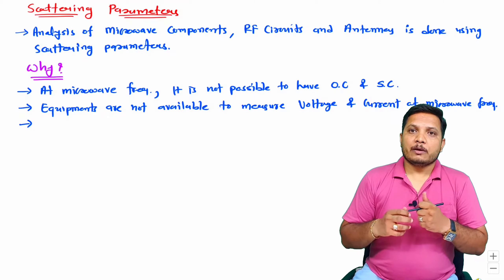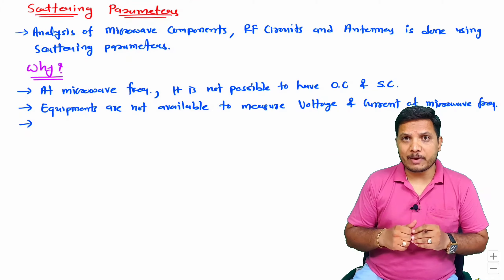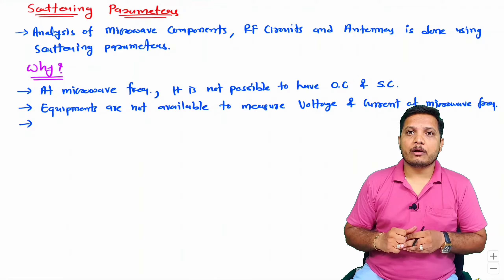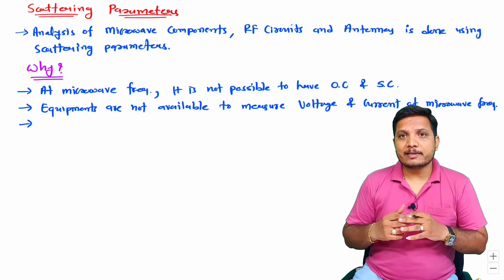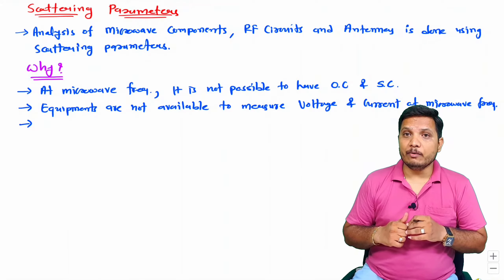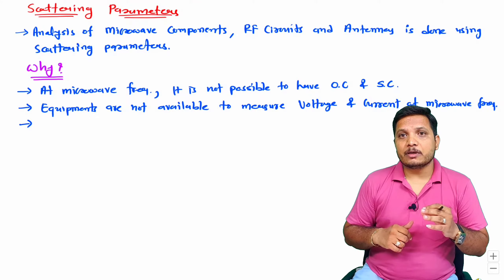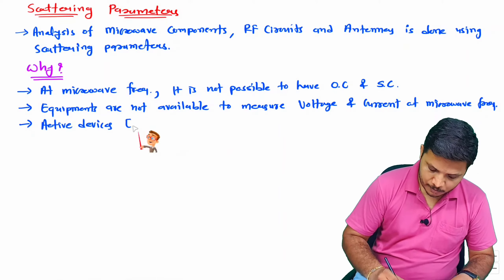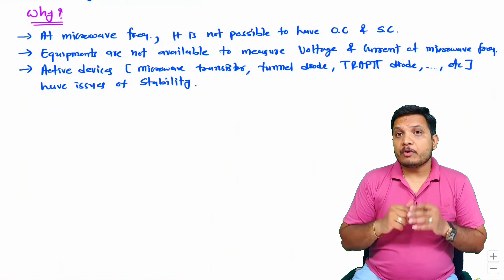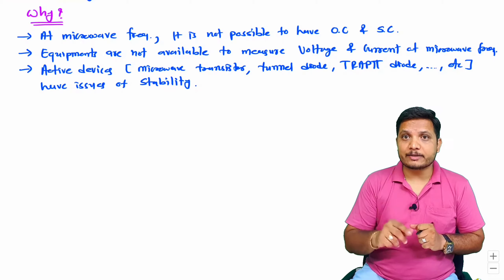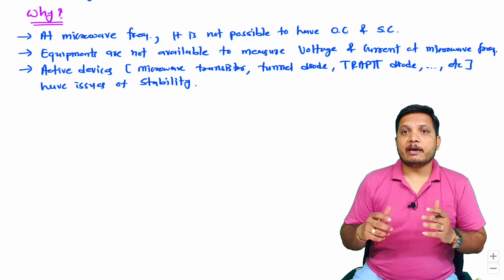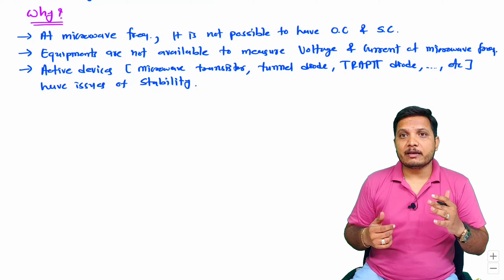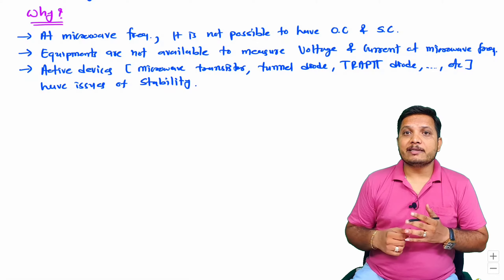In microwave circuits you will observe there are some active devices — like tunnel diode, IMPATT diode, TRAPATT diode, and microwave transistors. Those active devices have issues of stability at microwave frequencies. So because of stability issues, one cannot have measurement using Y, Z, H, or ABCD parameters. So at microwave frequencies it is not possible to have open circuit and short circuit; equipment is not available to measure exact voltage and current; and active devices have stability issues.